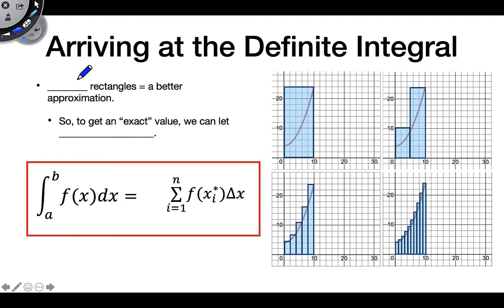So as we just mentioned, the more rectangles we have, the better of an approximation our Riemann sum will be, as you can see in these pictures here. So to get an exact value, we could take advantage of that fact.